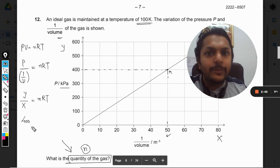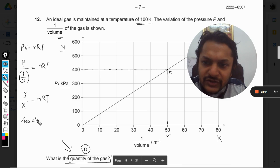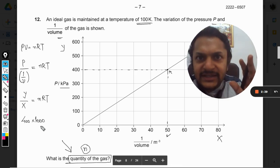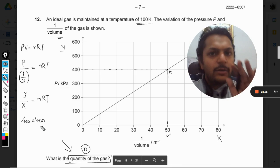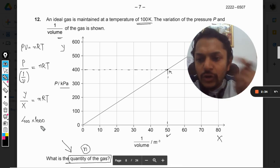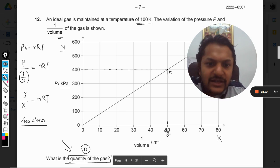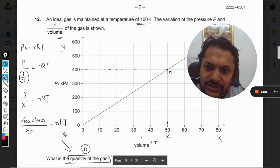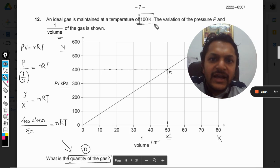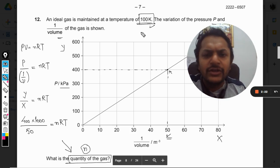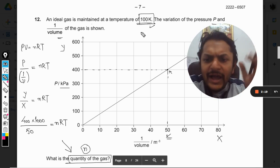What is the value of y? It is 400 kilopascal, so we have to write 1000 here because we calculate only in SI units, and the SI unit is pascal, newton per meter squared. So kilo has to be expanded. This divided by x, what is the value of x? 50 will be equal to nRT. The T is given as 100 Kelvin.